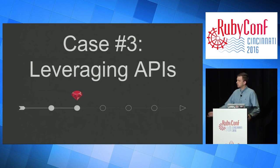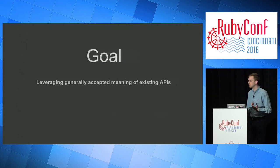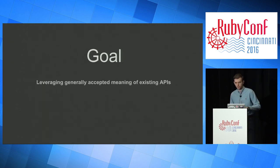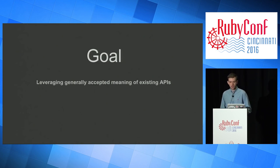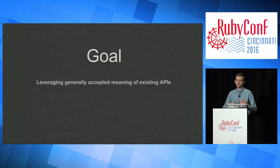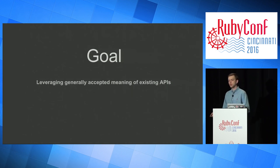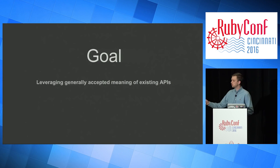Case number three is leveraging APIs. Our goal is leveraging the generally accepted meaning of existing APIs. Every time you use Ruby, you're using the public interface that Matz created to solve problems — you're inheriting his design. Whenever you inherit code elsewhere, you're inheriting their design no matter what. You have to decide whether you're going to change the meaning of the design you've inherited, keep the generally accepted meaning, or leverage it.